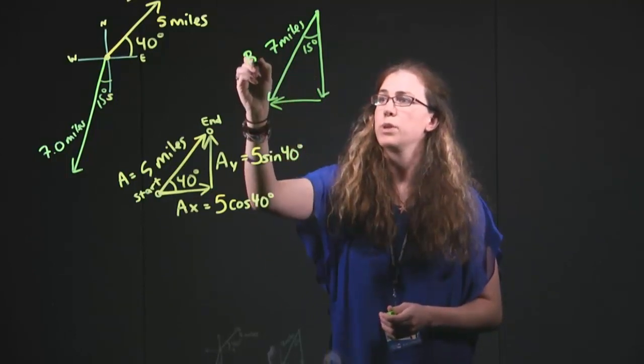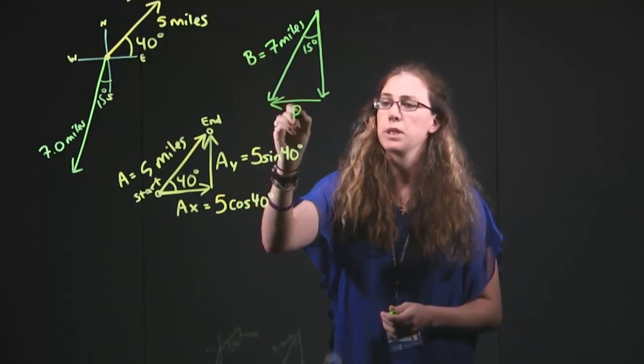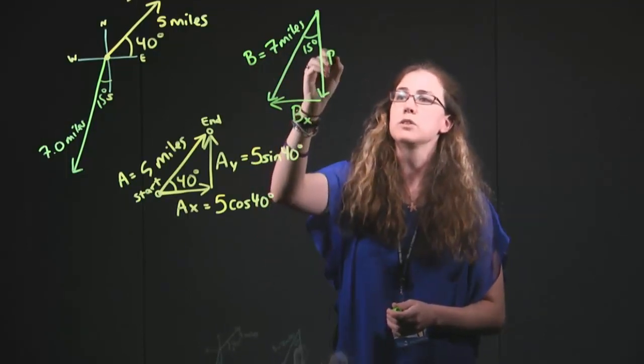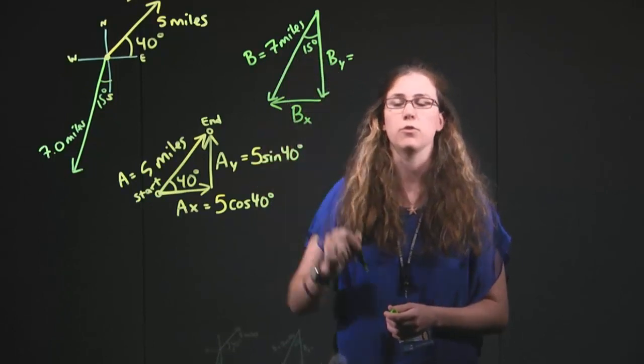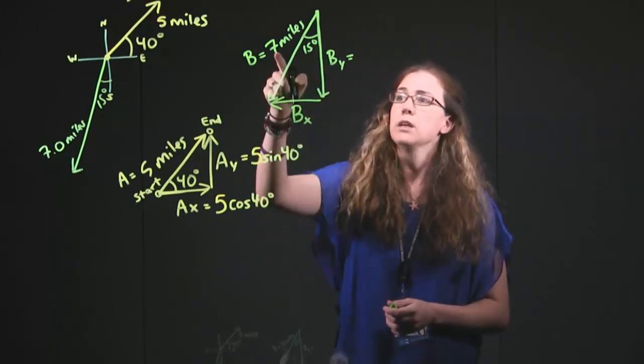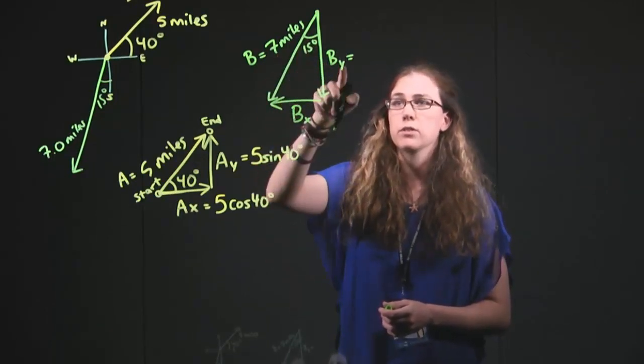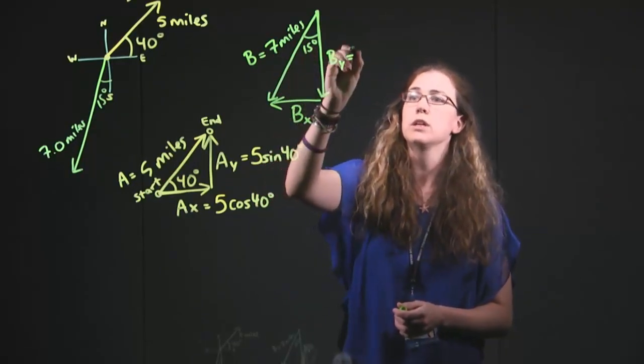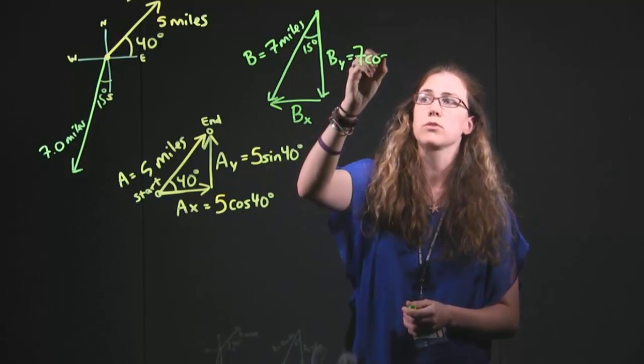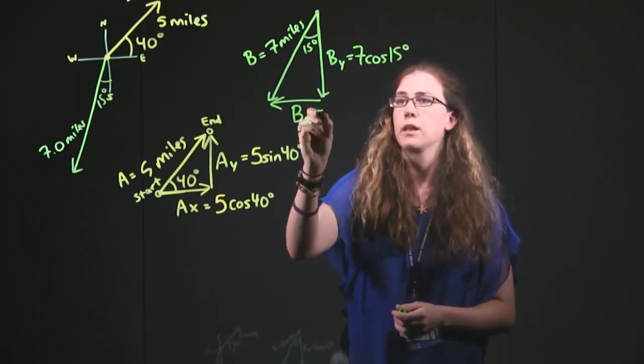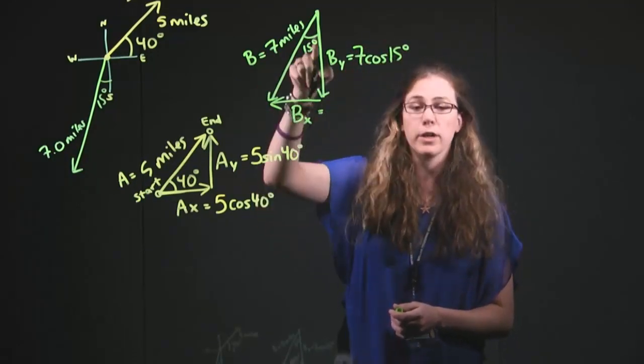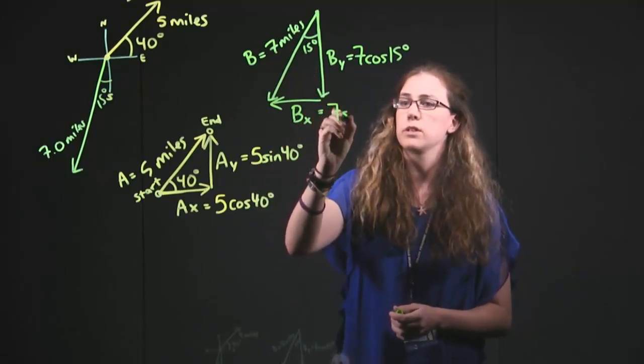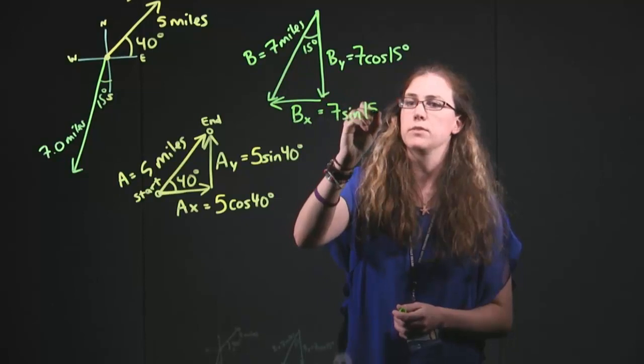We want to break it up into components the same way. This we'll call B, which means this piece is Bx, the horizontal piece of B. And this is By, the vertical piece of B. 7 is the hypotenuse here. Now we look, this one is the one that's adjacent, next to the angle. And so this is where cosine goes for this triangle. And then this is as far away from the angle as possible, it's the opposite. And so we use 7 sine 15 degrees.